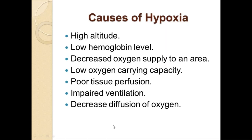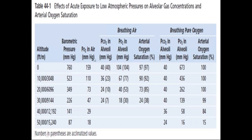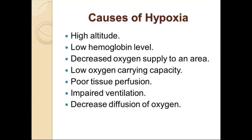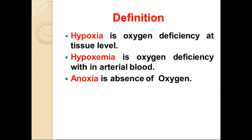Under normal physiological conditions, a normal person breathes at a barometric pressure of 760 mmHg. Our partial pressure of oxygen is 159 mmHg. As long as barometric pressure is normal, oxygen reaches the tissue level adequately. When this fails, hypoxia — oxygen deficiency at the tissue level — results.